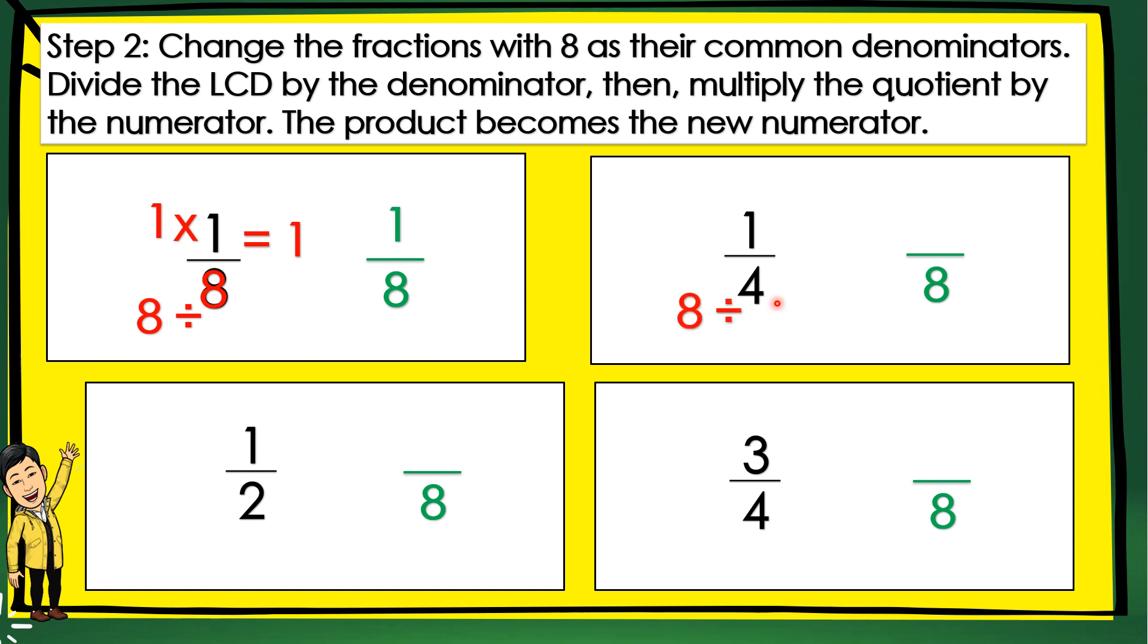And then, we also have 8 divided by 4. That's 2. And then, multiply it by 1. The answer is 2. So, the answer is 2/8. And then, we also have 1/2. So, 8 divided by 2 is 4 times 1. The answer is 4. So, the answer should be 4/8.